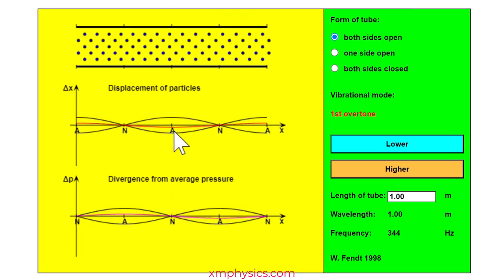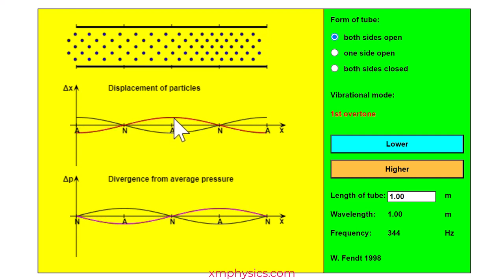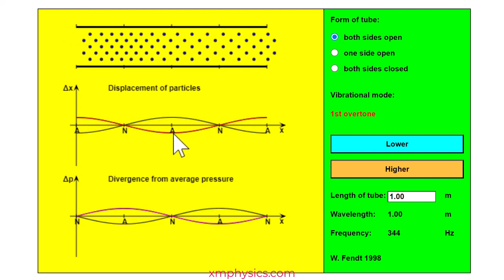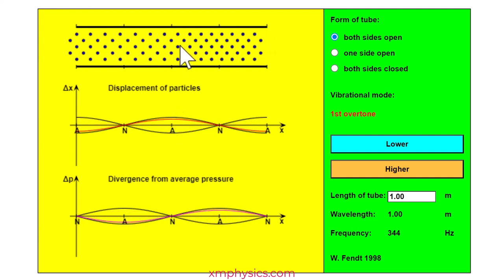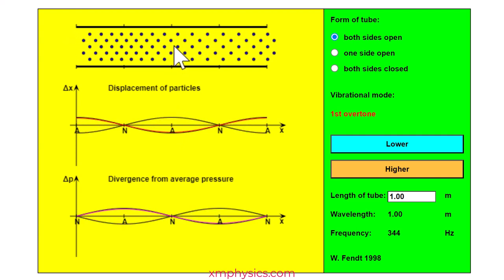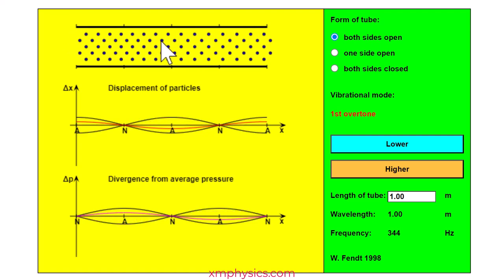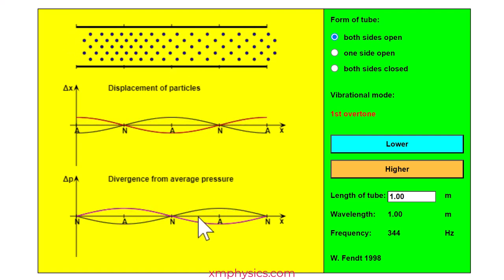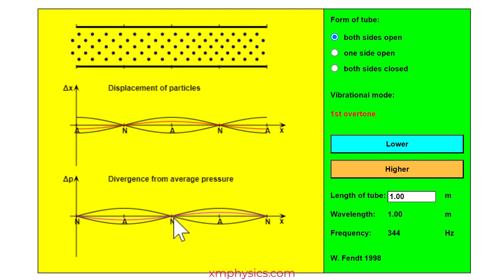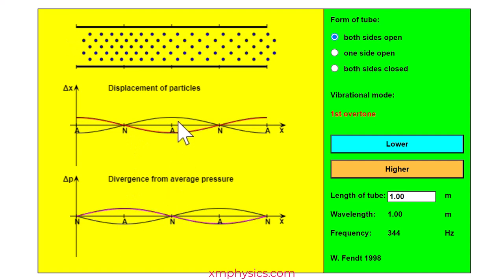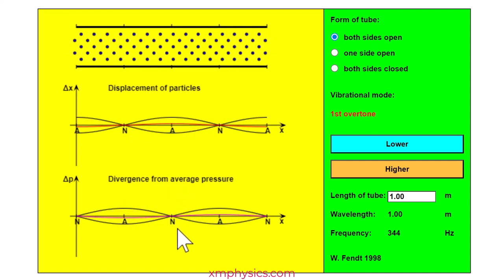So you can see that even though at the anti-node the displacement swings from the most negative to the most positive, because everyone is moving in the same direction — either going rightward together or going leftward together — the pressure here is stuck at atmospheric pressure. So now I hope you understand why a displacement node is a pressure anti-node and a displacement anti-node is a pressure node.